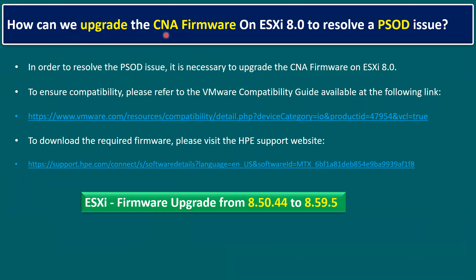Specifically, we'll cover how to upgrade the CNA — Converged Network Adapter — firmware on ESXi 8.0 to resolve a Purple Screen of Death issue. To resolve the PSOD issue, it is necessary to upgrade the CNA firmware. To ensure compatibility, please refer to the VMware Compatibility Guide. To download the required firmware, we download from the HPE support article. The versions we are upgrading from are 8.50 to the 8.59 series.